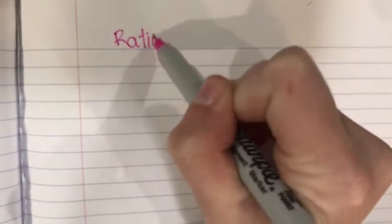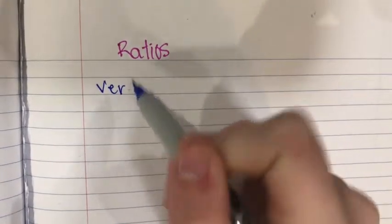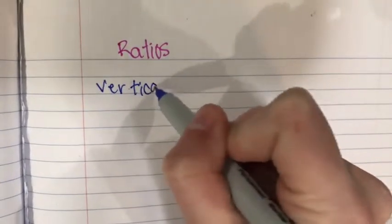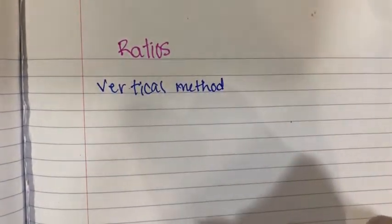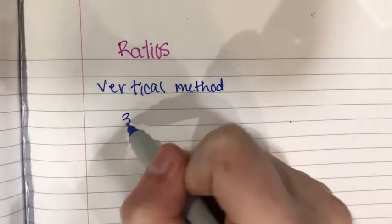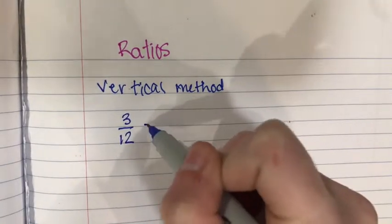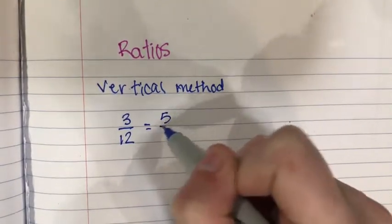Today we are going to be doing three different methods of solving ratios. The first method is called the vertical method. The example that we are going to do for this is 3 over 12 equals 5 over x.